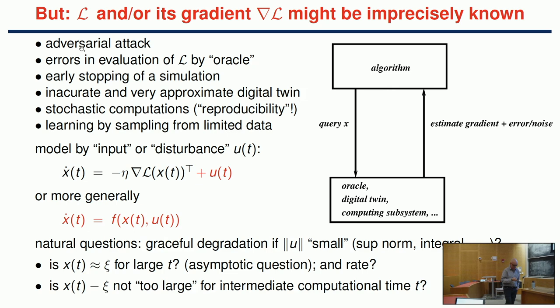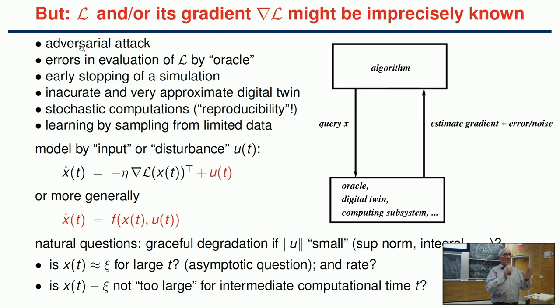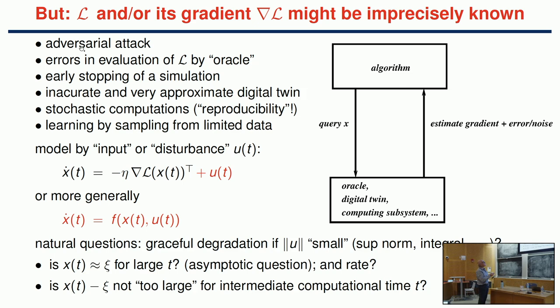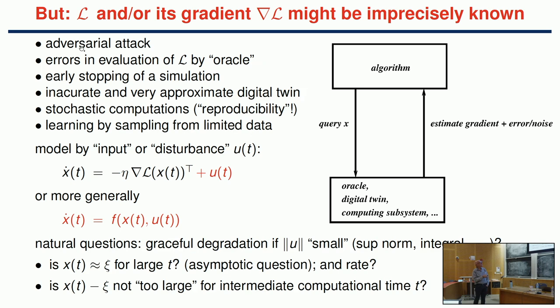Now we come to the effect of inputs. Suppose we want to optimize L but don't have an explicit form for the system—we can't compute the gradient directly. Assume we have a sensor, oracle, digital twin, or computing subsystem that we can query with x, and it returns an estimate of the gradient but with an error. The error could come from an adversary, an imperfect oracle, truncated simulation horizon in an LQR problem, or stochastic effects in reproducibility of optimization.